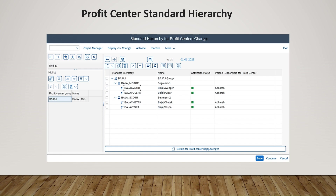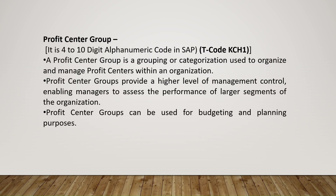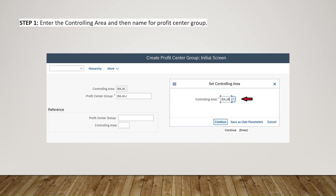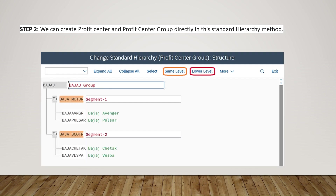A profit center group is a 4-to-10 digit alphanumeric code in SAP, created through T-code KCH1. It is a grouping or categorization used to organize and manage profit centers within an organization. Profit center groups provide a higher level of management control and can be used for budgeting and planning. To create profit center groups, enter the controlling area and name; you can then create profit center groups at the same level or lower level within the standard hierarchy.